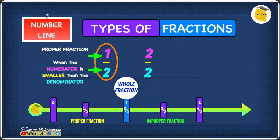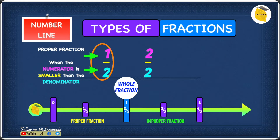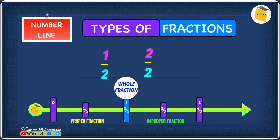A proper fraction is when the numerator is smaller than the denominator. Now let's see where 1 over 2 goes on the number line — it goes right where the proper fraction is.